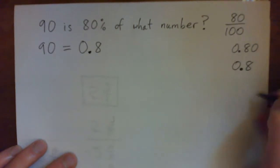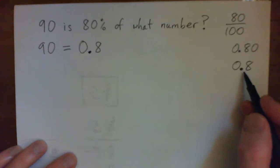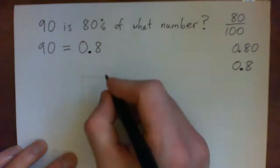That's the same number, doesn't matter. 8 tenths, 80 hundredths, same thing. It's like, do you want 80 pennies or do you want 8 dimes? Same thing.